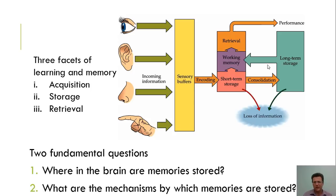We have two types of storage mechanisms: short-term or working memory, and long-term storage. Long-term storage refers to memories of our past — a 21-year-old student can remember images and vacations from when they were six or seven. Those are the three facets of learning and memory: acquisition, storage, and the ability to retrieve that information. If you listen to this lecture and a question comes on your final examination about learning and memory, you want to be able to retrieve that information to answer the question correctly.